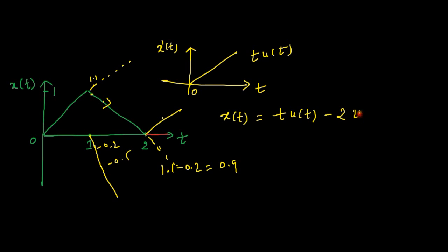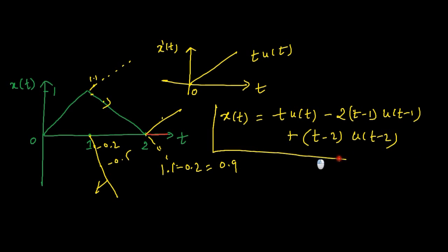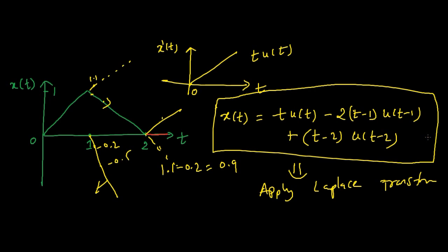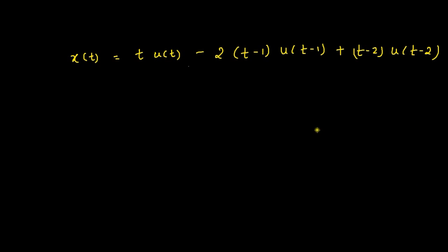In terms of mathematical representation, we subtract 2·(t−1)·u(t−1), which represents that shifted ramp. Similarly, we can do t−2. This is how we represent x(t). I have represented the triangular pulse x(t) in terms of time-shifted ramp functions.